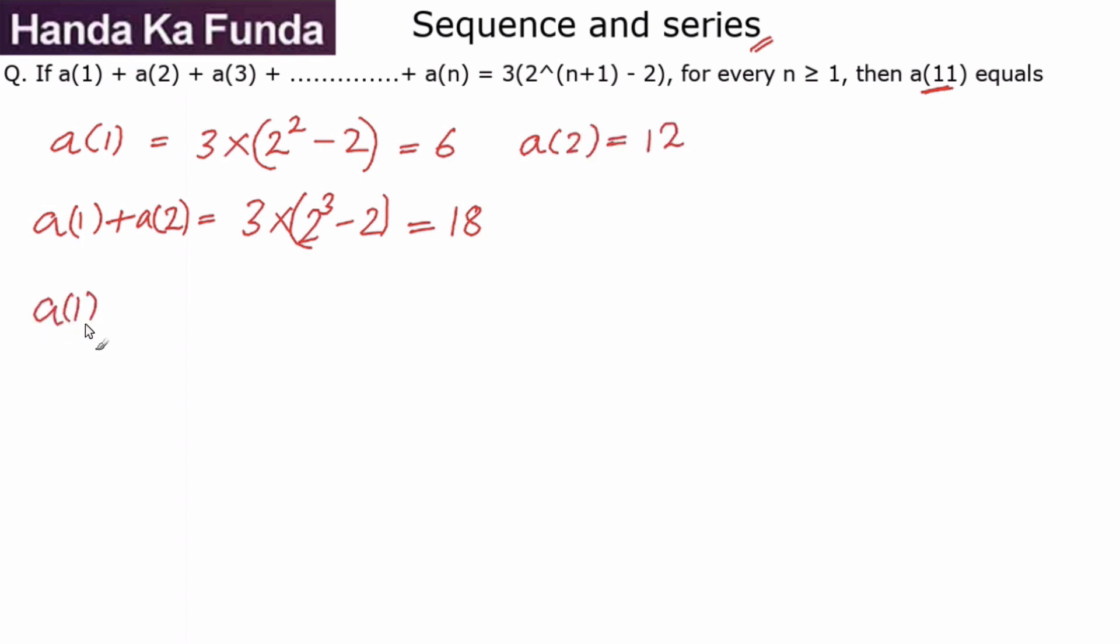Let me try and find out a1 plus a2 plus a3. How much will that be? That will be 3 into 2 to the power of 4 minus 2, so 2 to the power 4 is 16, 16 minus 2 is 14, 3 into 14 is 42.